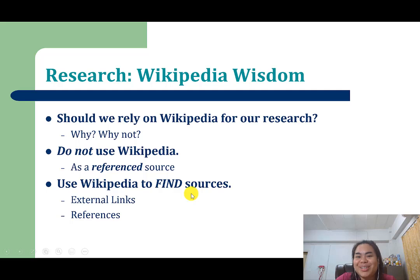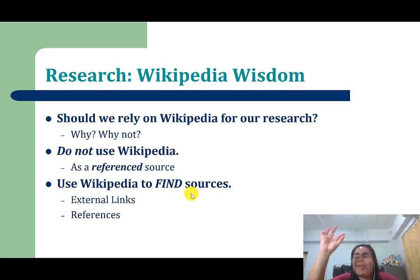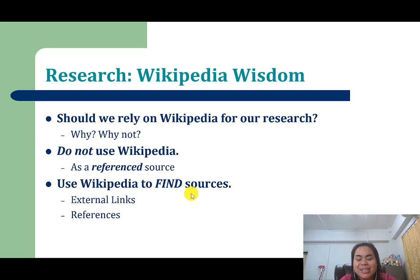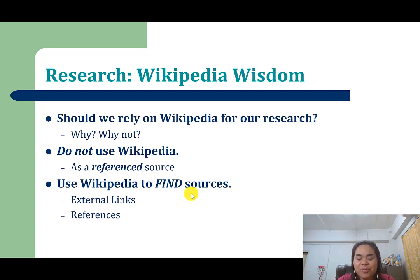Instead, use Wikipedia to find sources. When you go into Wikipedia and find a statement — for example, 'Muay Thai is a Thai traditional sport dated back to the Ayutthaya era' — there's a small bracketed number above the last word. Click that number and it links down to the references section at the bottom of the page. There you can see the actual source that the Wikipedia writer used to make that claim.